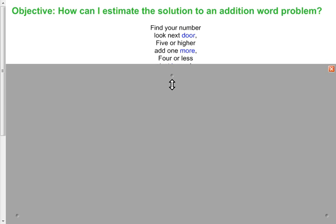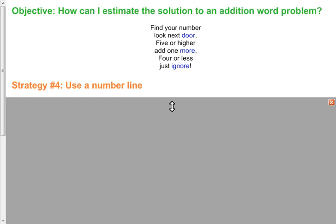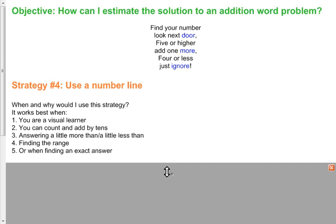Our last strategy is using a number line. You can see as I fold down, we still have a rounding column that we'll continue to use. We're going to pull down a little bit more and look at the reasons why we might use strategy number four: to use a number line.